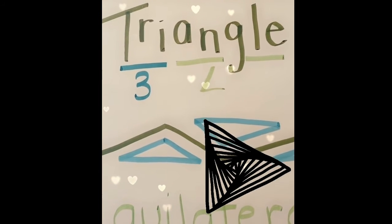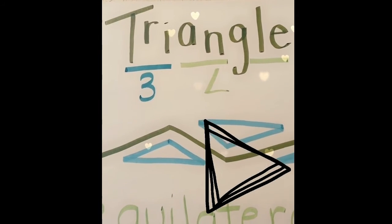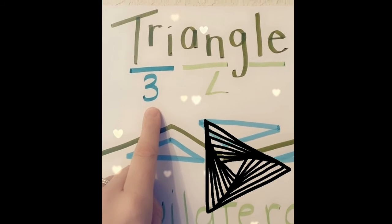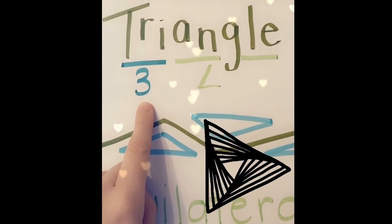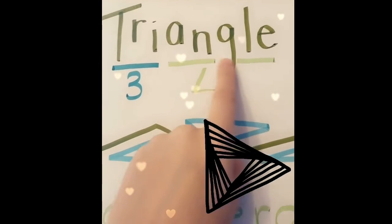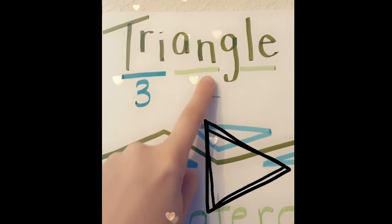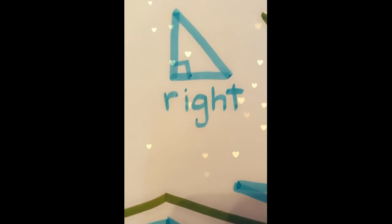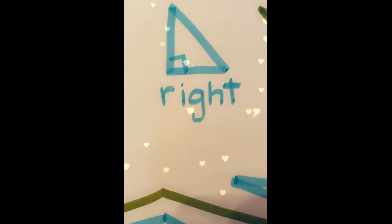So first let's talk about the word triangle. The prefix in this word is tri, which means three. It's like tricycle, tripod, triangle. And then that root word here is angle, so three angles.